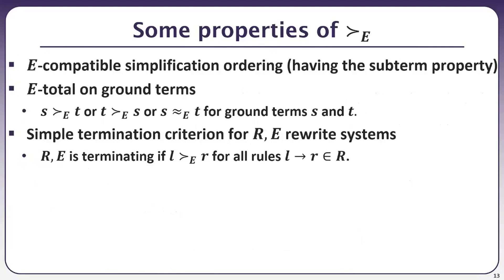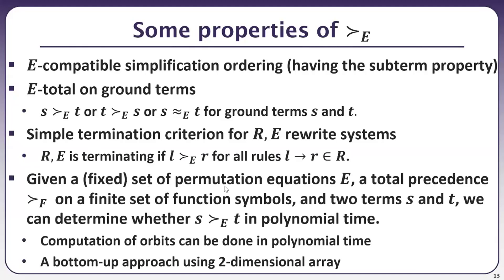Some properties of our E-compatible ordering: it is an E-compatible simplification ordering with the subterm property, it is E-total on ground terms, and it provides a simple termination criterion for R/E rewrite systems. Given a fixed set of permutation equations, a total precedence, and two terms S and T, we can determine whether S > T in polynomial time. The computation of orbits can be done in polynomial time using the generating set for the permutation group. Using a bottom-up approach with a two-dimensional array comparing strict subterms of S and T, we can determine the ordering in polynomial time.